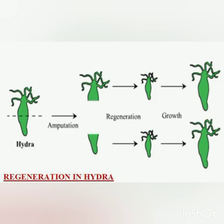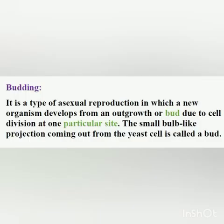Now we come to another method of asexual reproduction — that is budding. Budding is also an asexual method of reproduction. In budding, a small bud is formed, and this bud grows, matures, and then is detached from the parent individual.